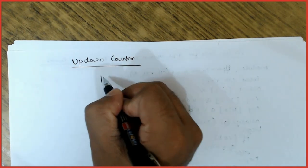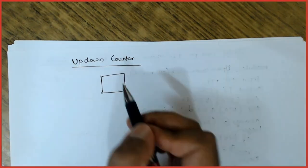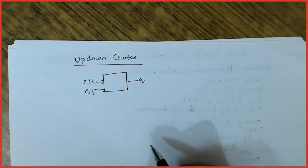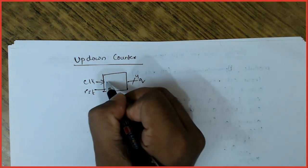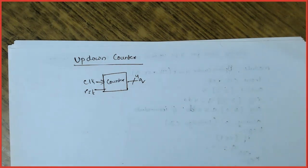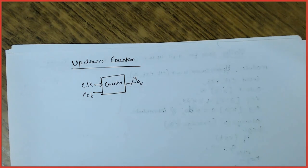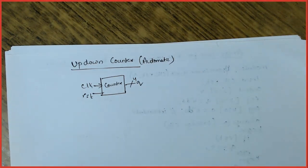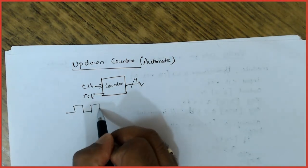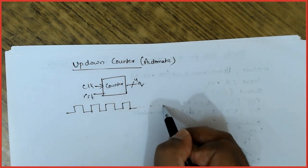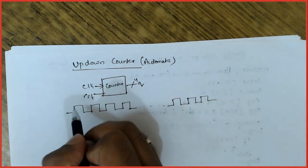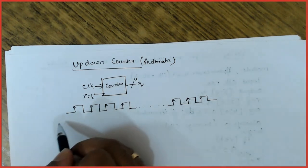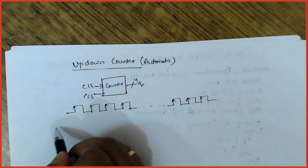A counter will have a clock, reset, and Q. For a 4-bit counter there are two ways of carrying out the up-down counter — one using an additional input and one without. Without an additional input is what we are studying in this session. At every positive edge of the clock, if reset is 0, the Q value goes on incrementing.